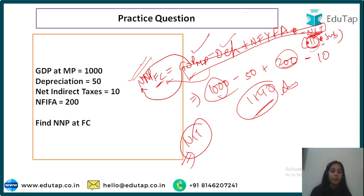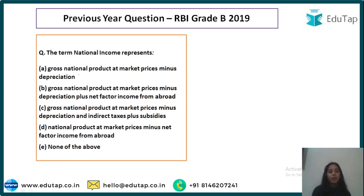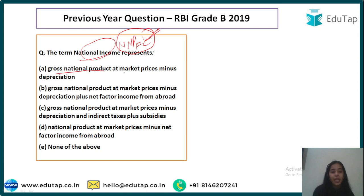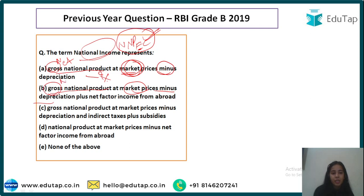Next question: national income represents NNP FC. We need to calculate NNP FC. Option A: GNP at MP minus depreciation gives NNP MP — but indirect taxes are not given, so we cannot convert to FC. This cannot be the answer.